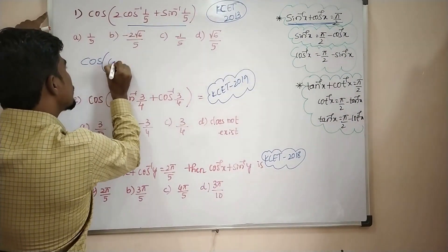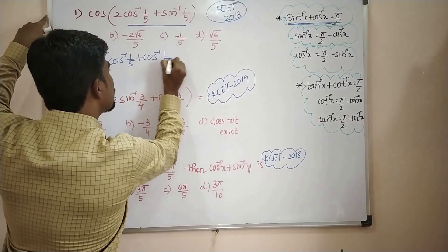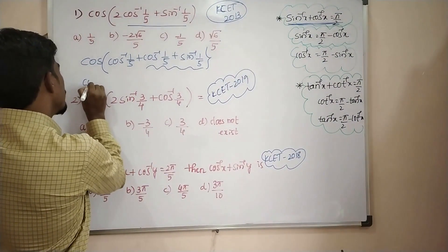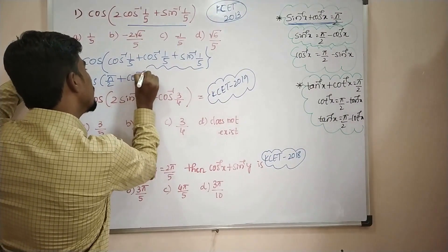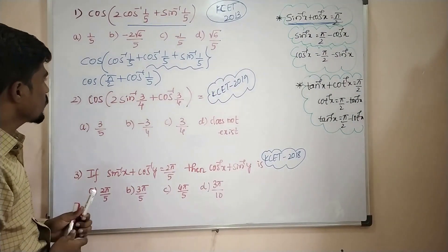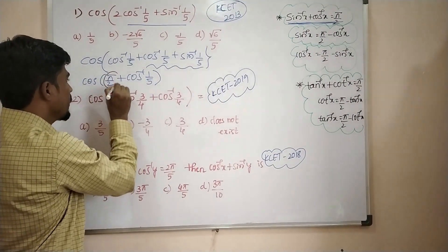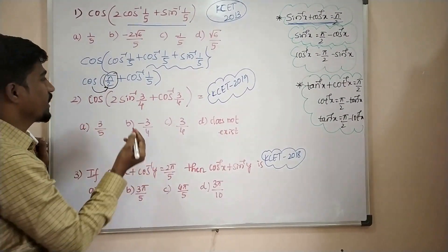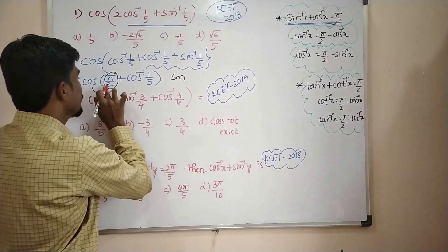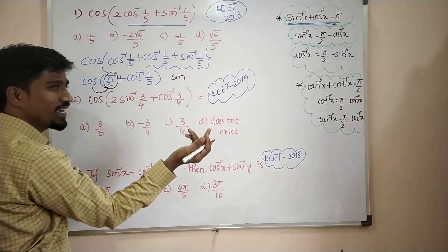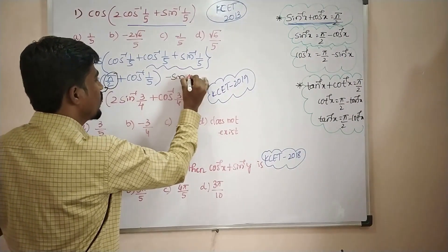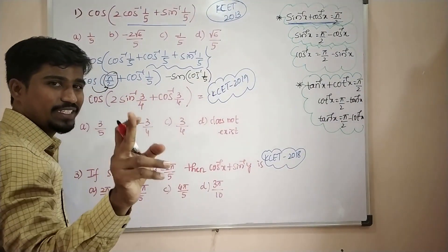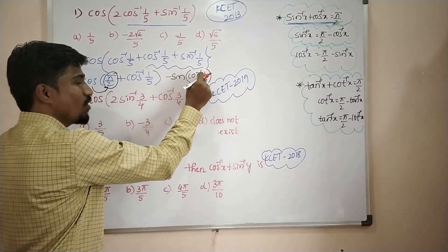cos of [cos⁻¹(1/5) + sin⁻¹(1/5)]. We apply this method: cos of [π/2 + cos⁻¹(1/5) − cos⁻¹(1/5)]. cos of [π/2 + sin of cos⁻¹(1/5)]. When we add π/2 the ratio changes — cos becomes sin. So we have minus sin of cos⁻¹(1/5). But this is sin of cos⁻¹, so cos of cos⁻¹x is the same thing.